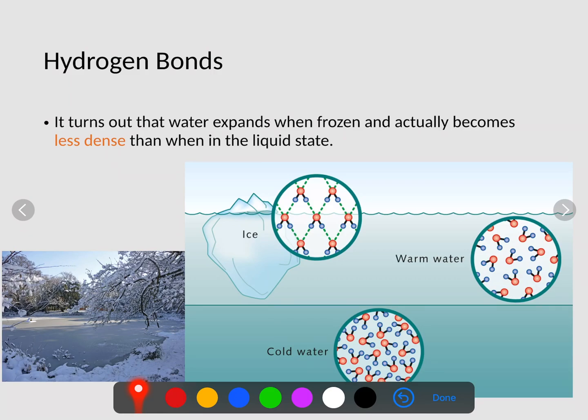But what happens is when it freezes, it creates this big lattice structure. And that lattice structure makes it less dense and floating on top. This is why ice can float in water, just like when you put ice cubes in a glass of water, they float on the top.